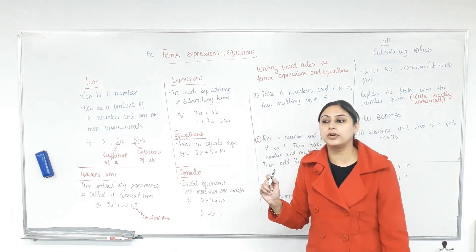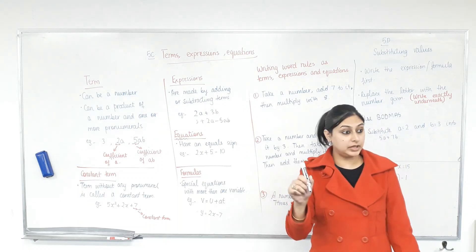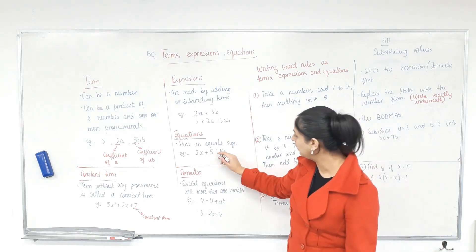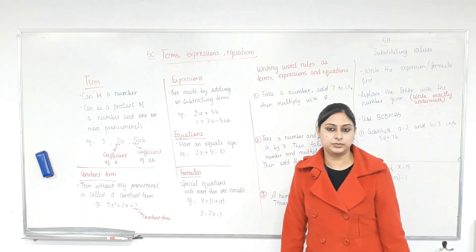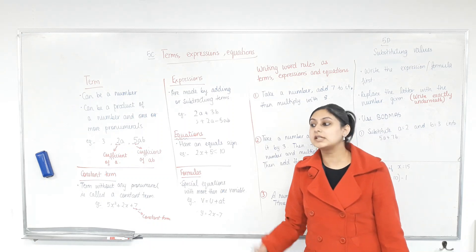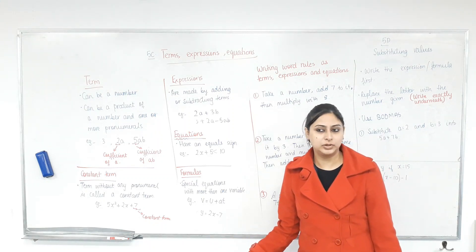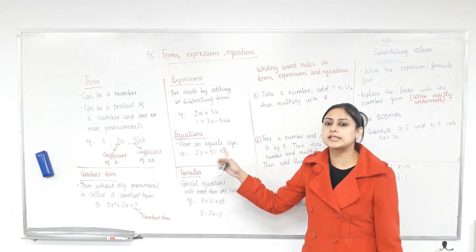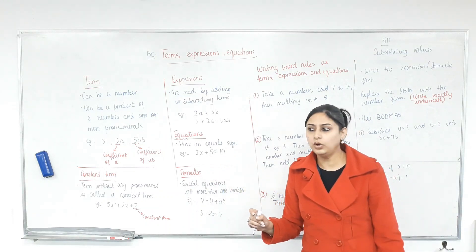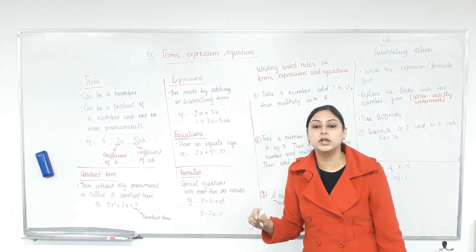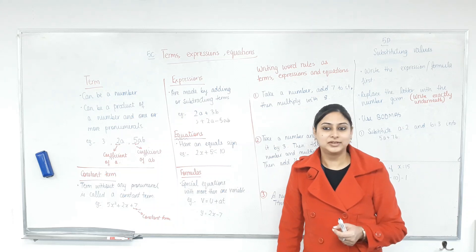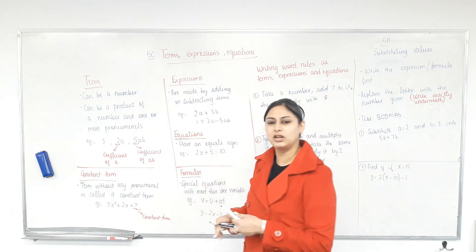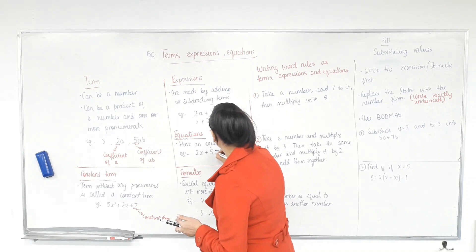The only thing you need to check for an equation is that it must have an equal sign. Now I'm going to do something tricky. This one doesn't have an equal sign — so what is it? It's not an expression because it still tells us that one side is less than the other. It's an inequality — it's not equal, it's in-equal. But you don't have to worry about it until year nine or ten.